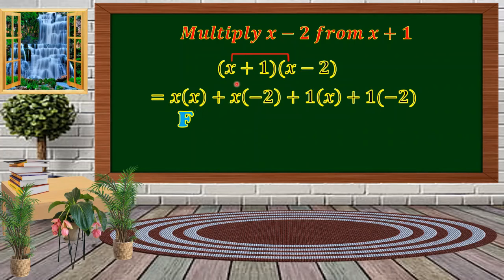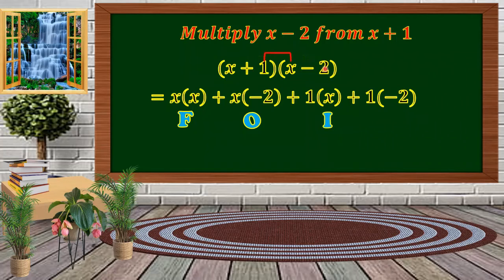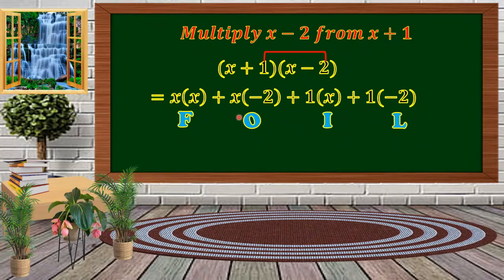F stands for the first terms: x times x. Next we have the outer term: x and negative 2. Then the inner term: 1 times x. And we have the last term: 1 and negative 2. That is the FOIL method.